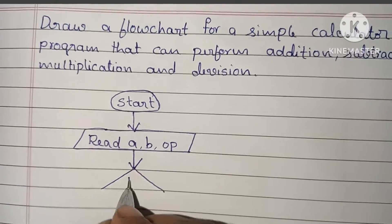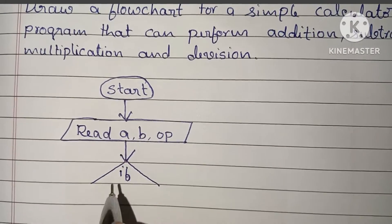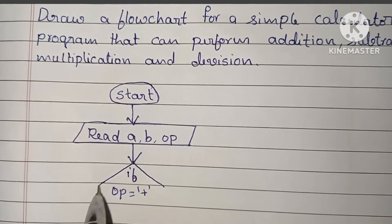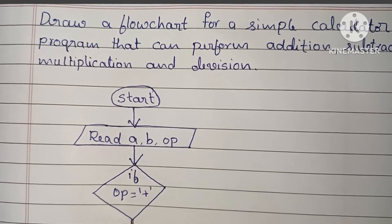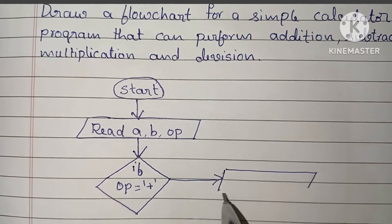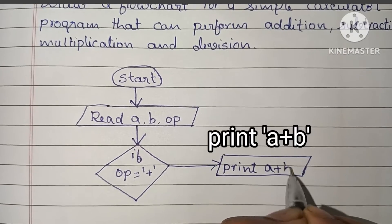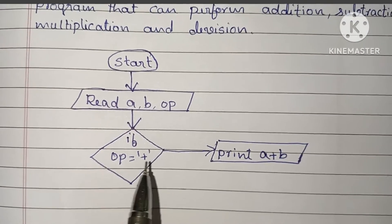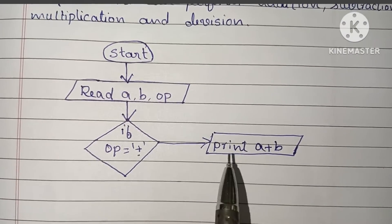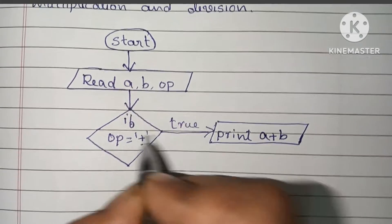Next, we check which operation was read in the input variable. If op is equal to plus, we have to perform addition. The output is to print a plus b — that is, the sum of a and b. This output is shown in a parallelogram shape.